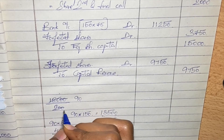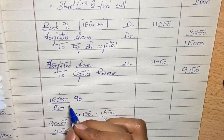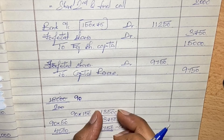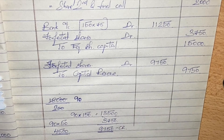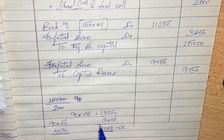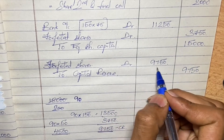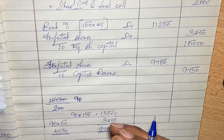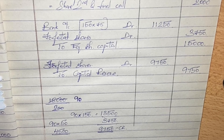To recap: the forfeited shares balance per share is 90 (18,000 divided by 200). For 150 shares, the balance is 13,500. From this, the discount allowed is 3,750, so the profit on reissue — which goes to capital reserve — is 9,750. The remaining 50 shares have a balance of 90 into 50, which stays in the forfeited shares account.